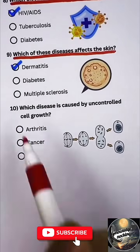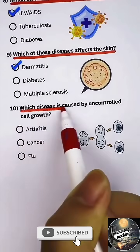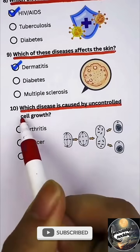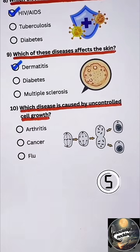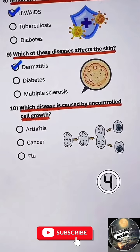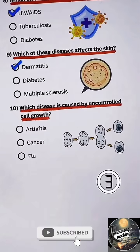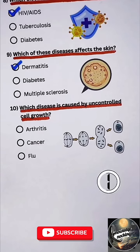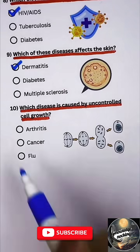Question 10. Which disease is caused by uncontrolled cell growth? Cancer.